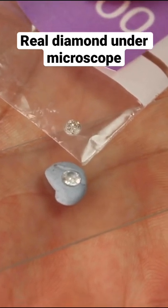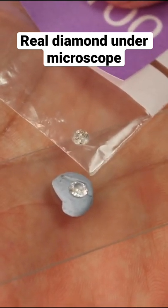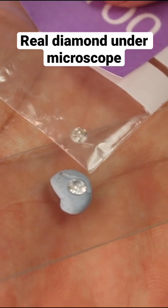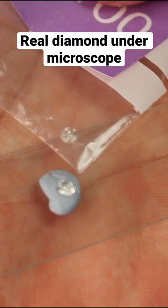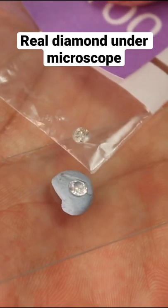So with our real diamond still being in the packet, you can see that there's quite a big difference in color between our cubic zirconia. I would say our cubic zirconia is a fair bit brighter and shinier than our diamond is, but let's have a look under microscope.